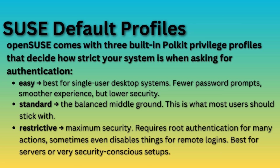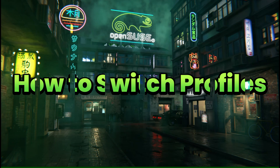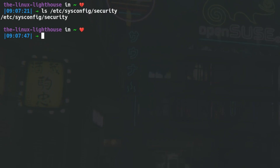openSUSE default profiles: openSUSE comes with three built-in polkit privilege profiles that decide how strict your system is when asking for authentication. Easy — best for single-user desktop systems, fewer password prompts, smoother experience but lower security. Standard — the balanced middle ground, this is what most users should stick with. Restrictive — maximum security, requires root authentication for many actions, sometimes even disabling things for remote logins; best for servers or very security-conscious setups.